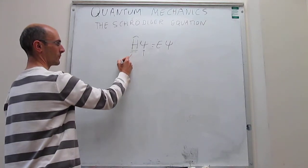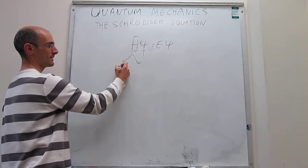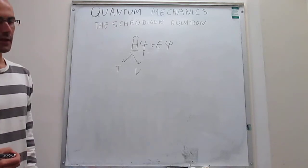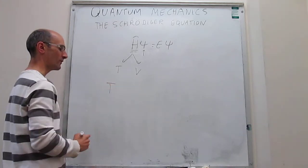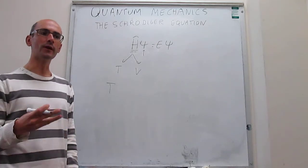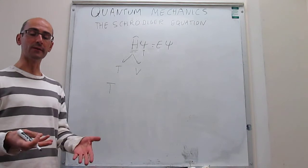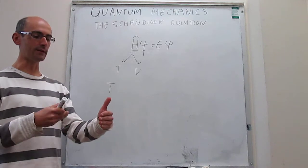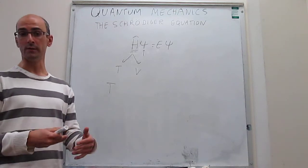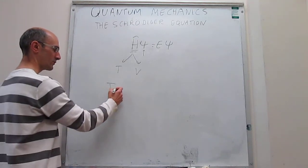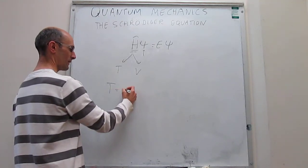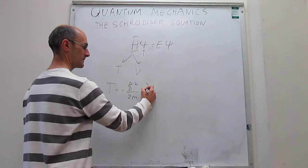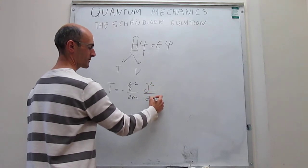How do we actually write this Hamiltonian operator? The Hamiltonian operator has two terms: one that is kinetic, which we call T, and one that is a potential operator. The kinetic energy term depends on how many directions the particle is moving. Generally, particles move in three directions of space — x, y, and z — but in some cases we might confine the motion to one or two dimensions. For one dimension, the Hamiltonian operator has this form: it's equal to minus h-bar squared over 2m, times the second derivative with respect to the direction of motion.